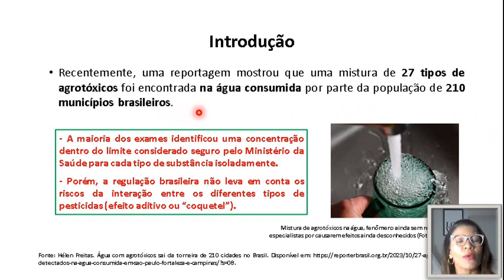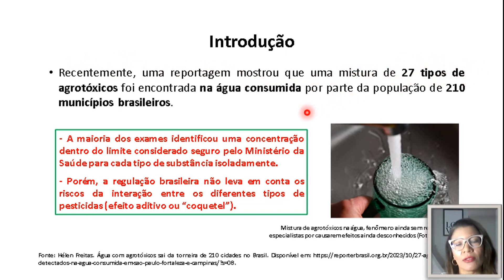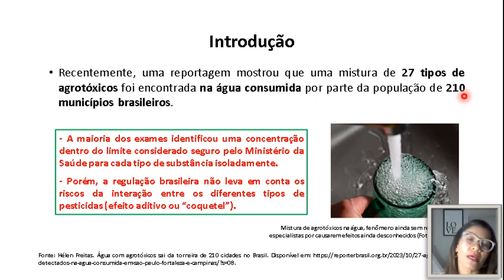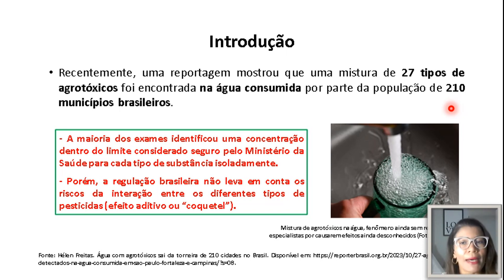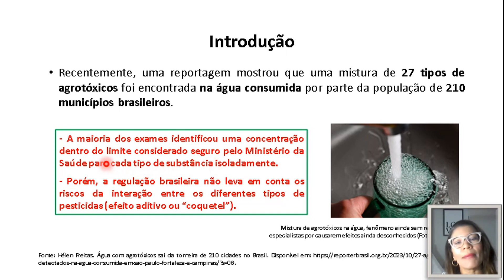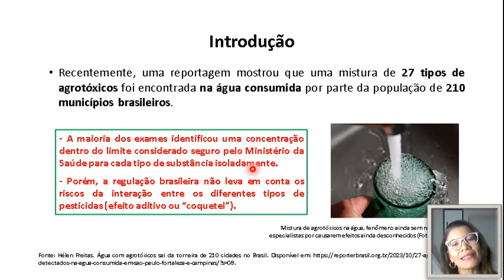Só para termos noção de como esses produtos se espalham no meio ambiente: recentemente, uma reportagem mostrou que uma mistura de 27 tipos de agrotóxicos foi encontrada na água consumida por parte da população de 210 municípios brasileiros. Foram feitas análises dessa água e a maioria dos exames identificou uma concentração dentro do limite considerado seguro pelo Ministério da Saúde para cada tipo de substância isoladamente.